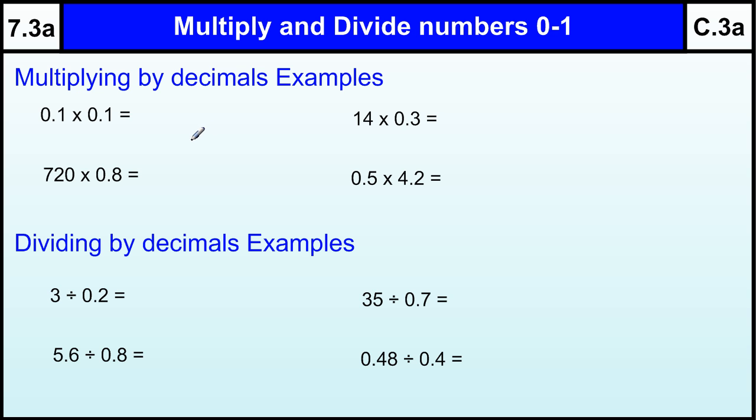Now there's lots of ways of thinking about this. Essentially what it boils down to is just ignoring the decimals and look at the numbers. We've got 1 times 1, and that answer is 1. Now we've got to figure out where the decimal point goes in.